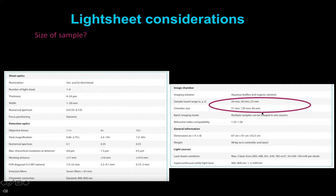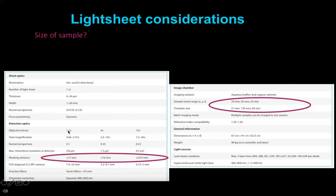In terms of sample size, you want to physically fit it into your chamber and check the travel range of the microscope. You also have to consider the working distance. For our 1x lens, the working distance is 1.7 centimeters, which is one of the highest working distances available at the moment. So you see how this varies with different lens magnifications.